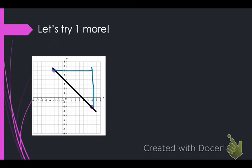Then I count the boxes. So, my rise is one, two, three, four, five, six, seven, eight. And my run is one, two, three, four, five, six, seven, eight, nine.